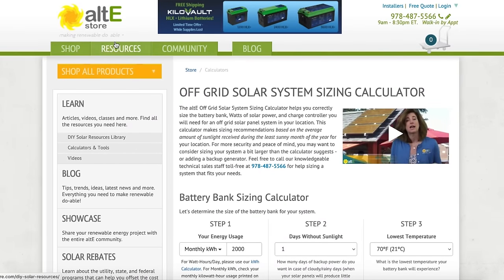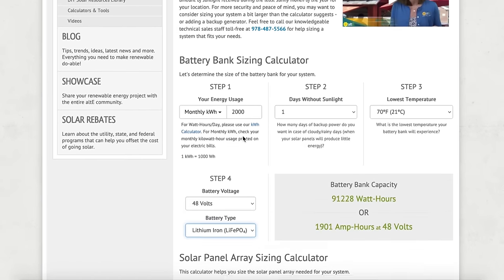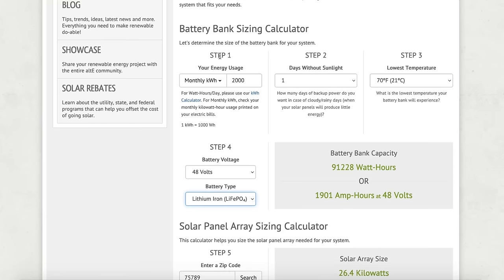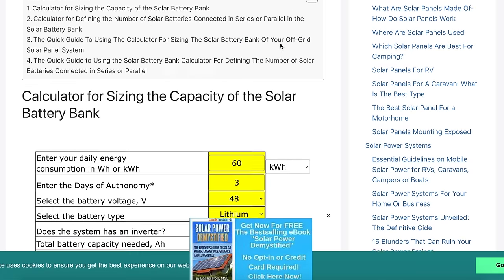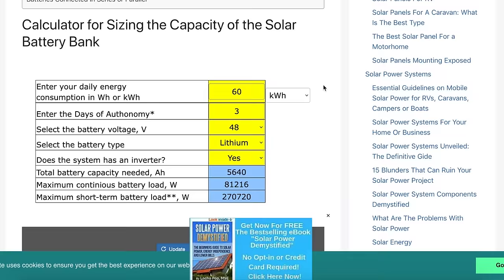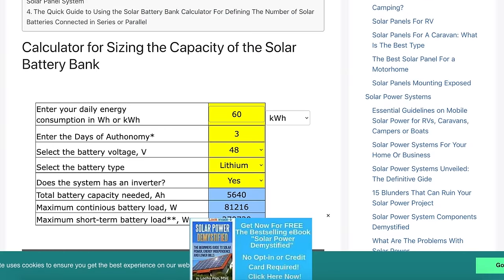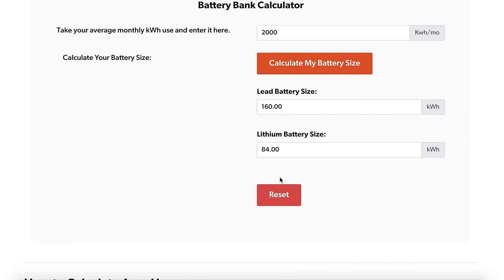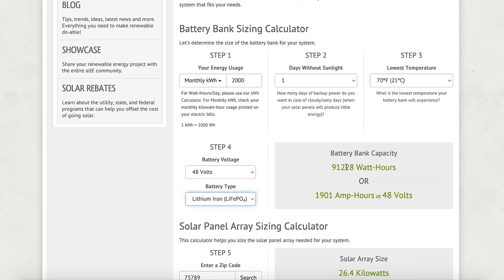We're going to go here to the Alte store, a very well-known store. They do a great job. They've got a battery bank sizing calculator as well. You can see the temperature is a factor here, and you can put a little bit more information in here, so it helps you calculate maybe a little bit more accurately what your battery bank size should be. And then we've also got a calculator over here from Solar Panels Venue. You can see the kilowatt hours for the lithium battery size on the Unbound Solar site tells me I need 84 kilowatt hours. But over here on the Alte store, they're saying I need 91 kilowatt hours. So there is a little bit of difference between them.